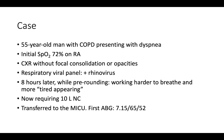His ABG on 10 liters nasal cannula on arrival to the MICU shows a pH of 7.15, PCO2 of 65, and PO2 of 52. How would you classify this patient's respiratory distress? And more importantly, what form of respiratory support should he receive and how do we go about making this decision? In this session, we want to help you define the type of respiratory failure, understand which patients benefit from which forms of respiratory support, and recognize when intubation may be necessary.